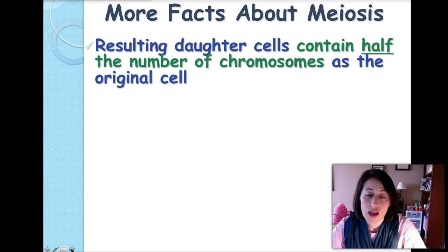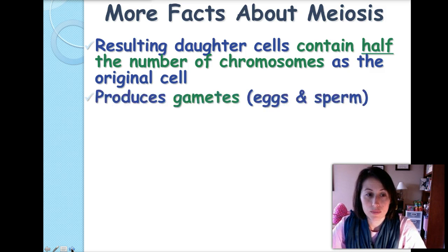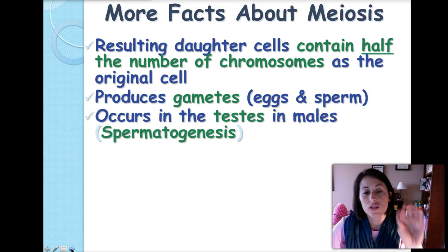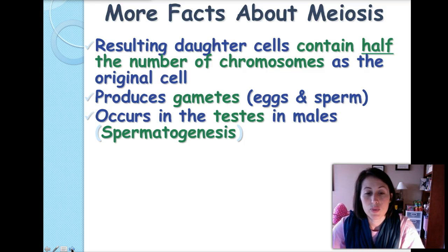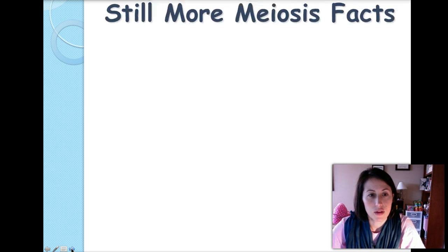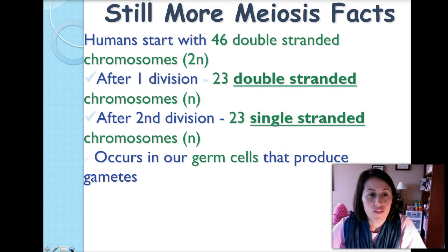The resulting daughter cells contain half the number of chromosomes as the original cell — that is what haploid means. Meiosis produces the gametes: this process either makes egg cells in females or sperm cells in males. In males this occurs in the testes and is called spermatogenesis; in females it occurs in the ovaries and is called oogenesis.